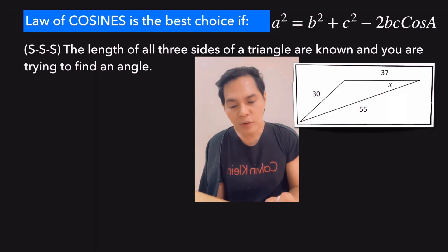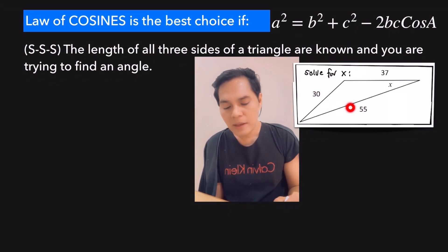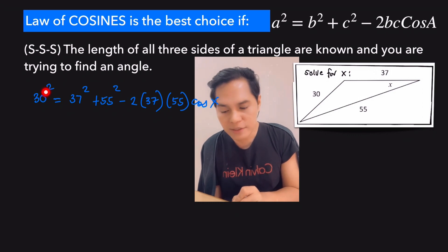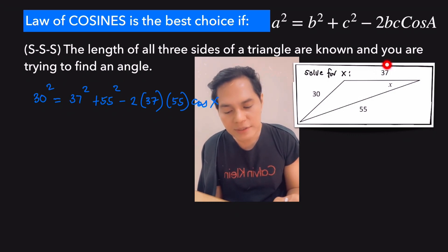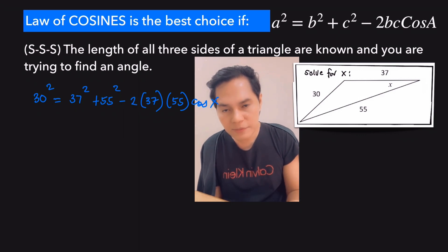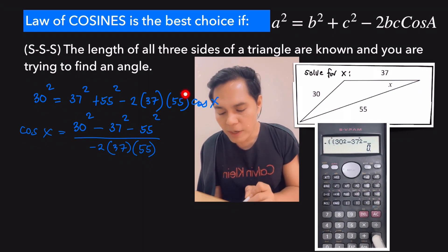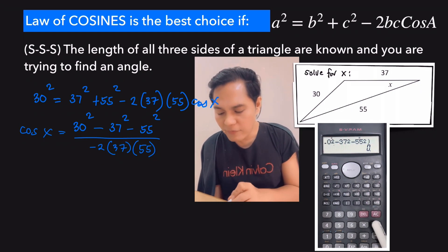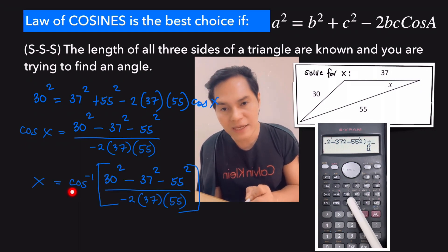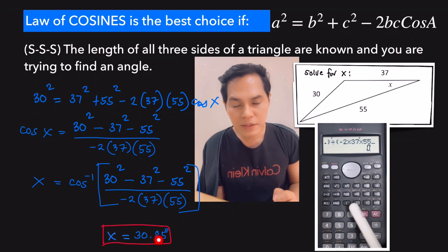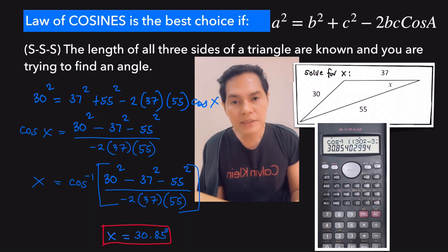To solve for angle x in the SSS example, write the side opposite to x first: 30² equals 37² plus 55² minus 2 times 37 times 55 times cosine x. Through algebraic calculations, transpose the squared terms to the other side and divide by negative 2 times 37 times 55, then take the inverse cosine. Using the calculator, the value of x is equal to 30.85 degrees. Don't forget to write the degree symbol since the missing quantity is an angle.